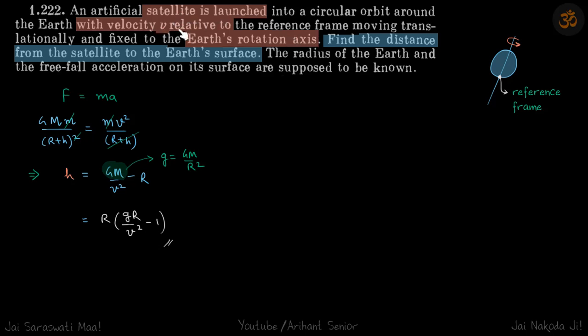A satellite is launched with velocity v relative to Earth's rotation axis. Find the distance from the satellite to the Earth's surface. The reference point is the Earth's rotation axis, so Earth is rotating about this axis.